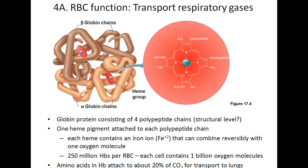Hemoglobin is a red pigmented protein with four protein building blocks — two alpha chain globulins and two beta chain globulins — that transport oxygen. Each globulin chain contains a heme group, which allows for the binding of oxygen to the iron in that heme group, enabling oxygen transport in the blood. The kidneys are the primary producers of erythropoietin (EPO), the hormone that stimulates erythrocyte production.